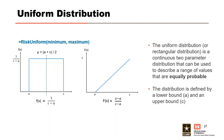The uniform distribution is a bounded distribution defined by an upper bound and a lower bound, describing a range of values where each value is equally probable. It uniformly samples between the specified upper and lower bounds and is a good distribution to use when you have a good idea of the possible range but are very uncertain about where within the range a value is most likely to fall. The mean is simply the average of the upper and lower bounds.